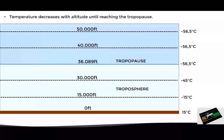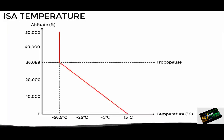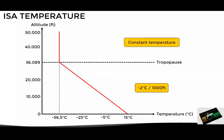Now, we must keep in mind that these values apply only within the ISA model, since in practice the altitude at which we find the tropopause varies depending on several factors. For example, near the equator the tropopause will be much higher than at the poles. However, since we are talking about a universal standard reference model, the values are fixed. All this we have discussed about the temperature in the ISA model results in a graph where the temperature decreases from sea level to 36,089 feet, and then it remains constant.